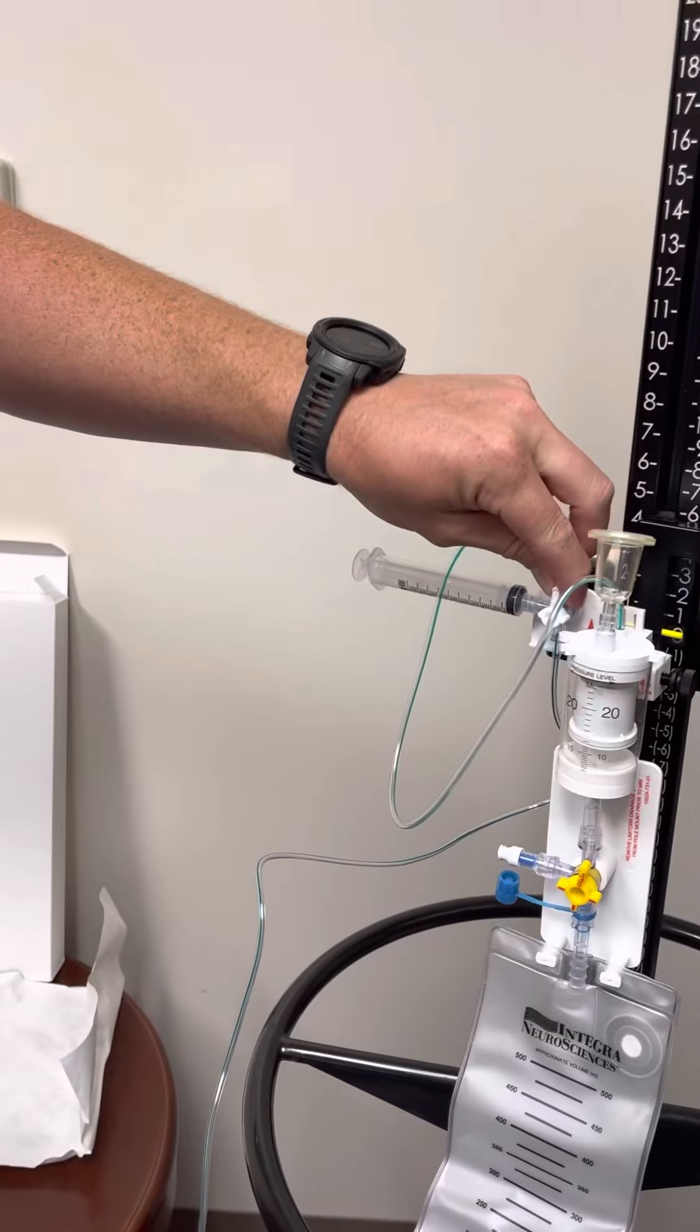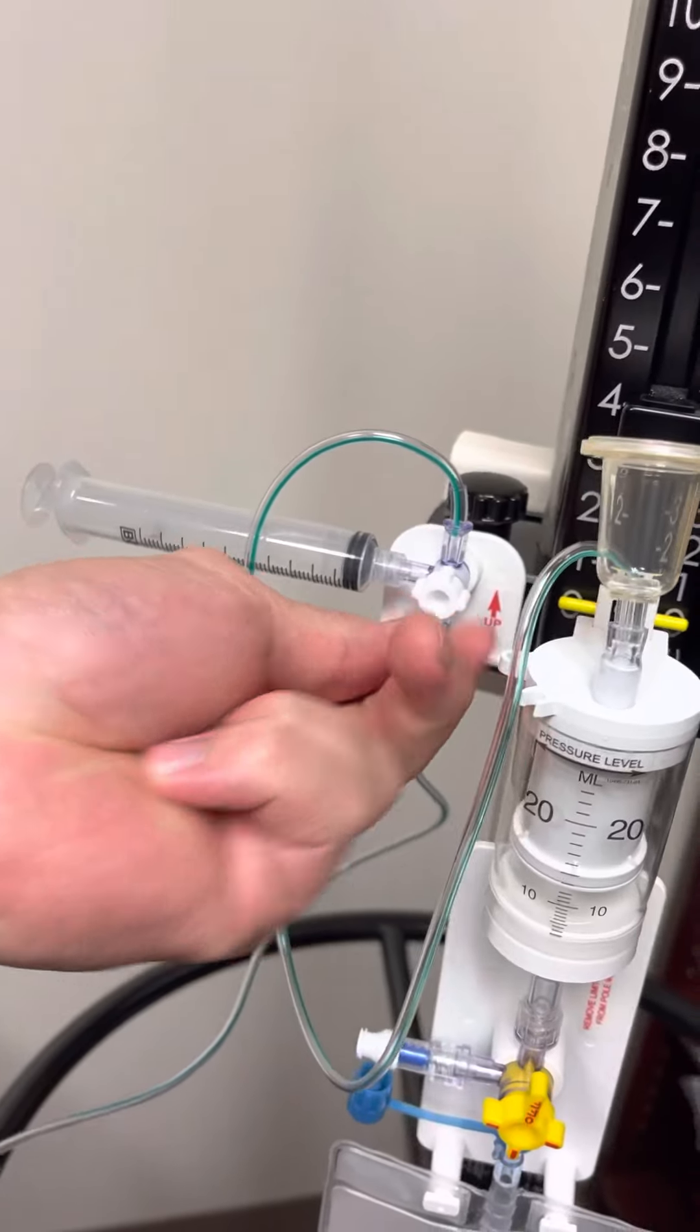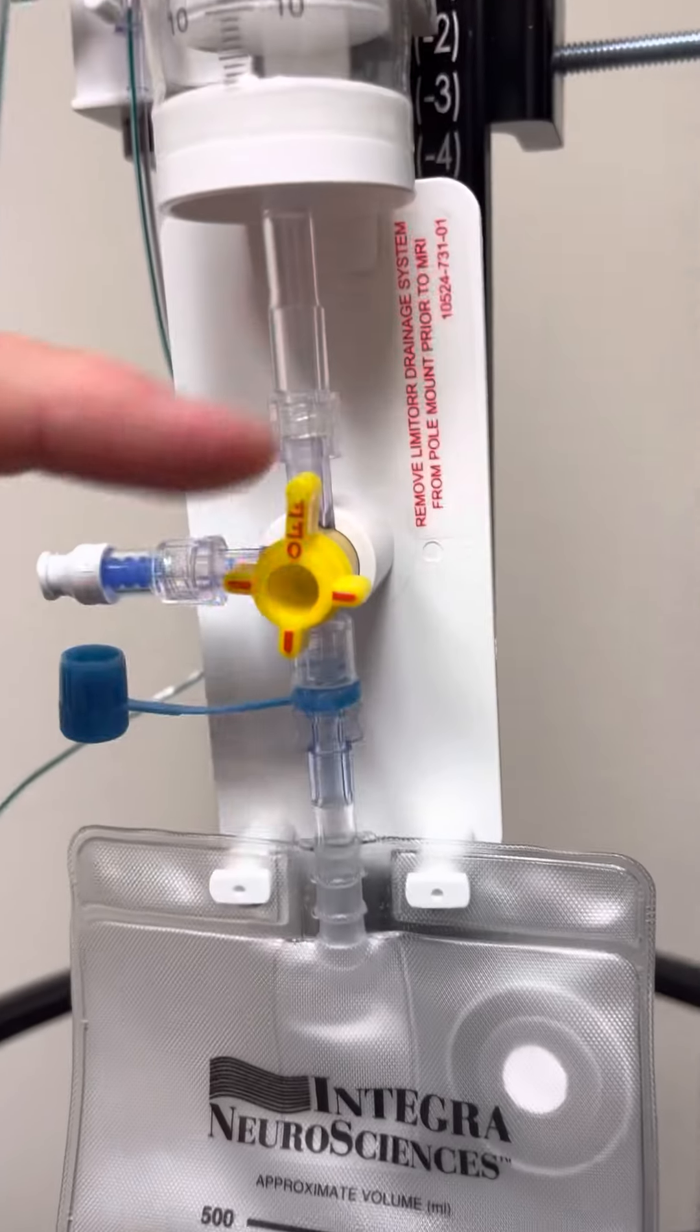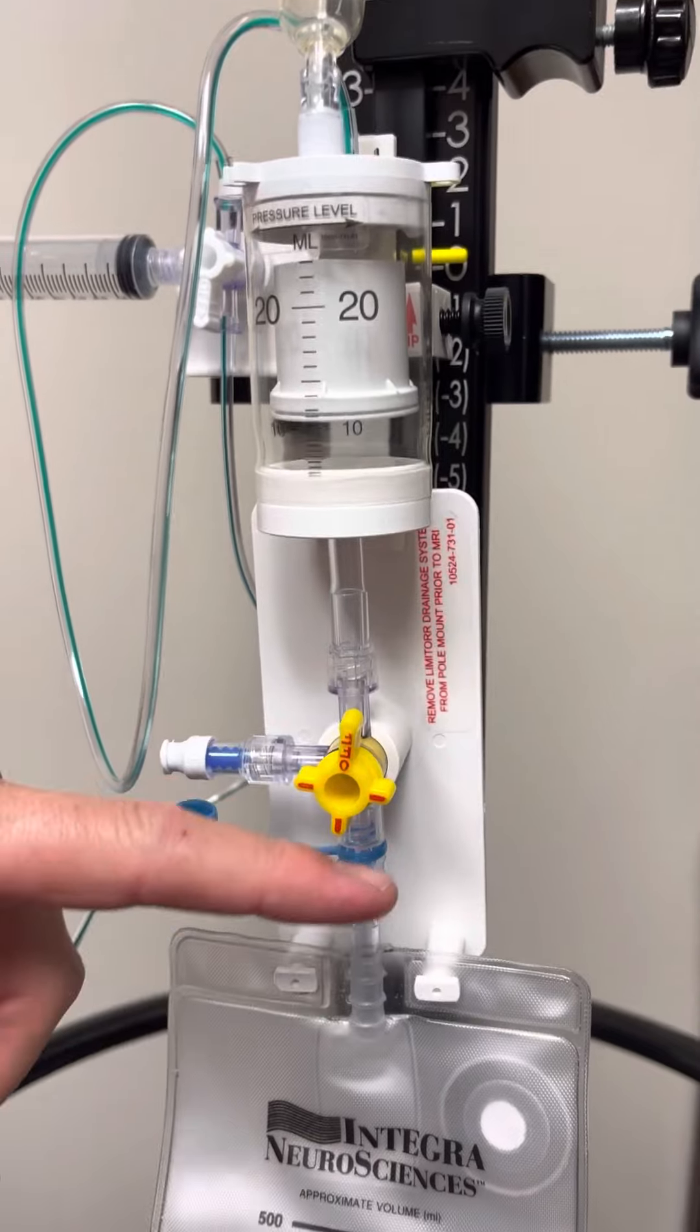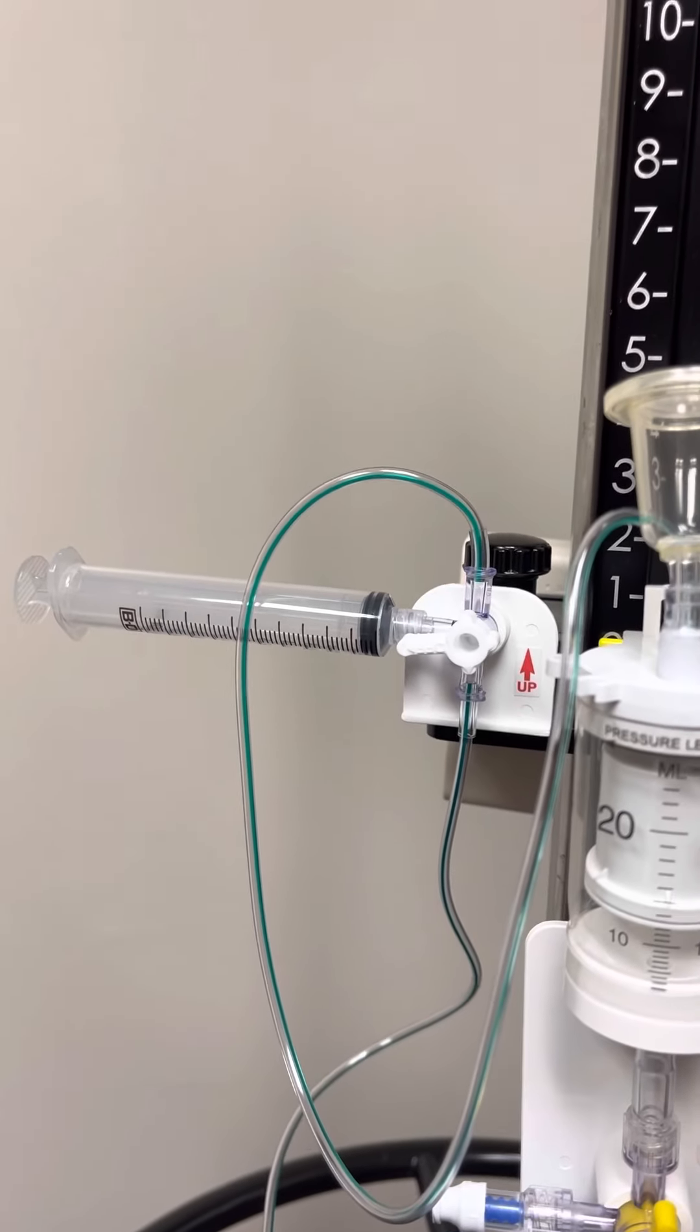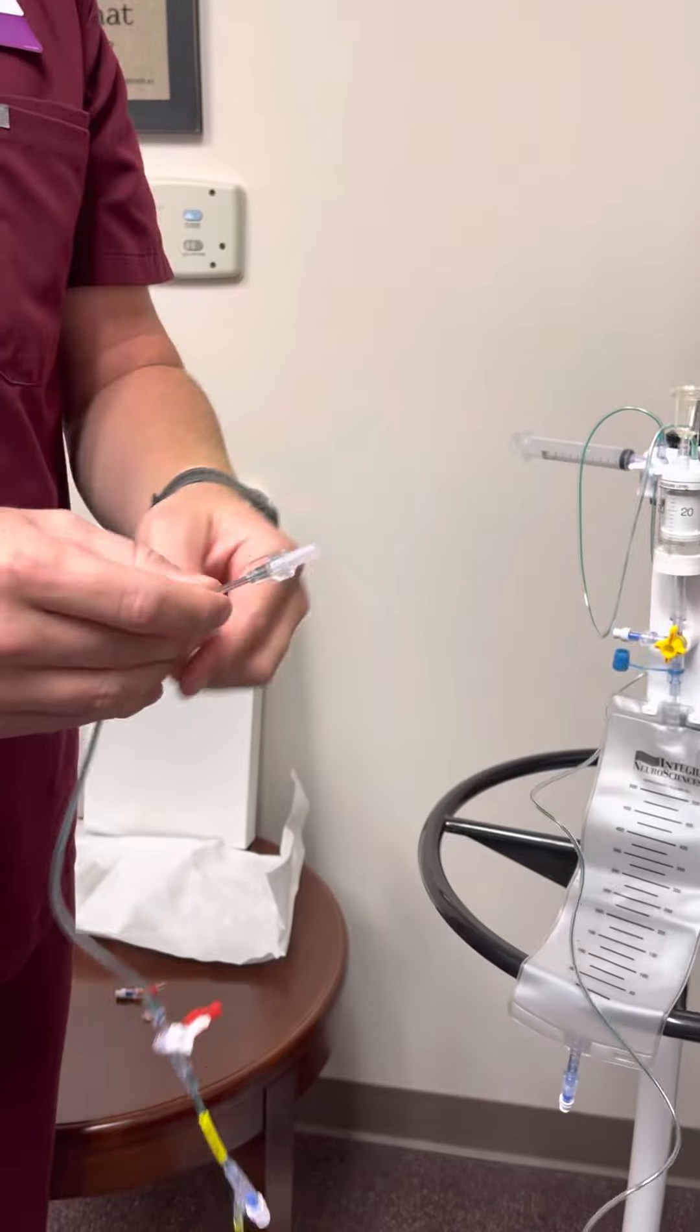I like to just prime out first. As soon as you see fluid dripping from here, turn the stopcock down. Prime so there's no air in this system. Making sure that this valve is turned up so when you're priming this burette, your fluid is not all going down to the drain bag. When the system's primed, you turn the stopcock back off. This is when, if you are at bedside, you would hand it to the provider and they would connect it to the lumbar drain.